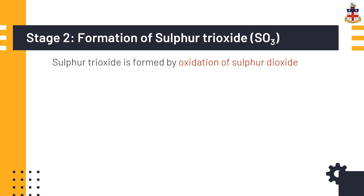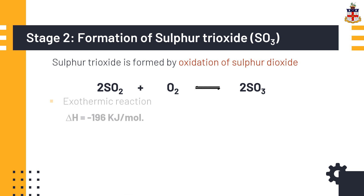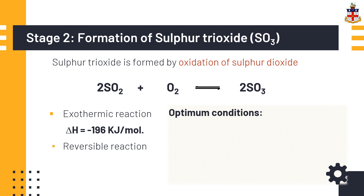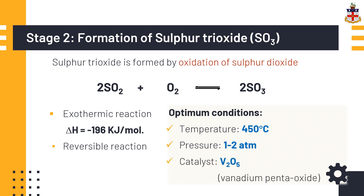In the second stage, sulfur trioxide is formed by oxidation of sulfur dioxide. The balanced chemical equation shows that two moles of sulfur dioxide react with one mole of oxygen to produce two moles of sulfur trioxide. It is an exothermic reaction and releases 196 kJ per mole of heat energy. It is a reversible reaction, so it never goes to completion because the products break down into reactants. To ensure maximum production of sulfur trioxide, optimum conditions are set: the temperature is maintained at 450 degrees Celsius and pressure at one to two atmospheres. The rate of reaction is increased by using vanadium pentoxide as a catalyst.